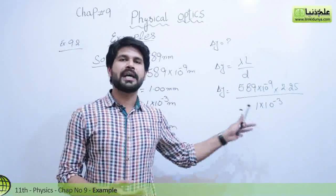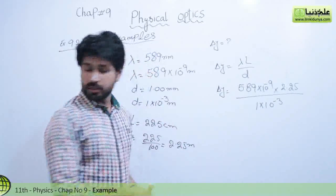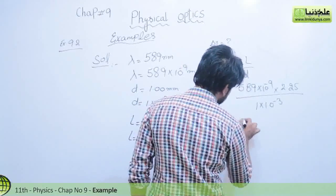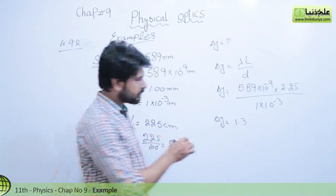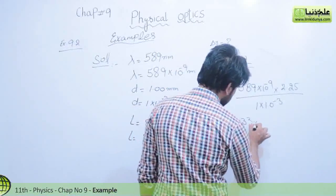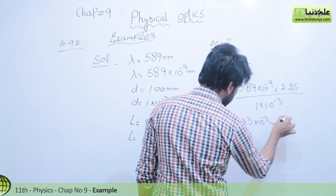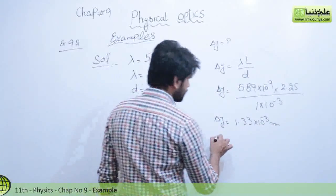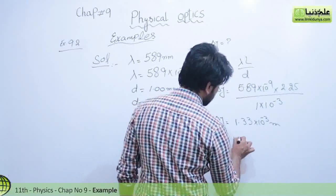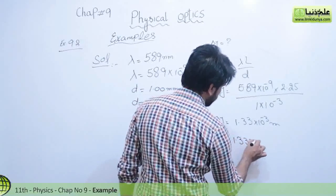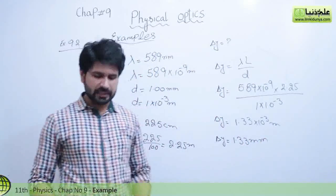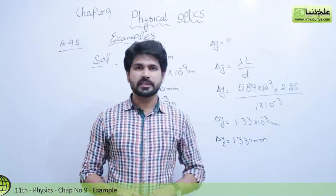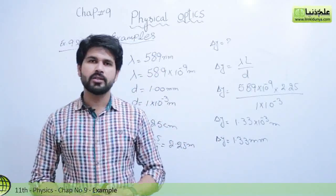Or you can solve this simultaneously on your scientific calculator. By solving this you will have delta y as 1.33 into 10 raised to the power minus 3 meter. And you know very well 10 raised to the power minus 3 equals milli, so you can write this as 1.33 millimeter, which is the distance between two adjacent bright fringes. So in this way you can solve this numerical.